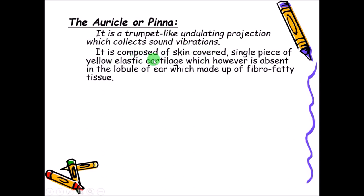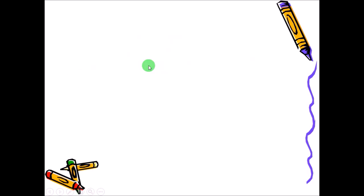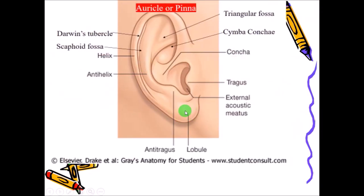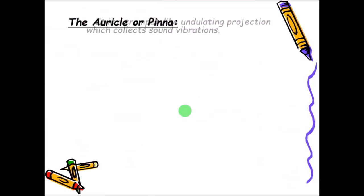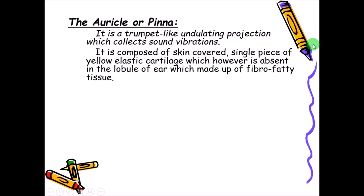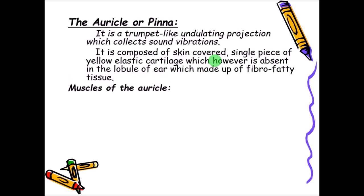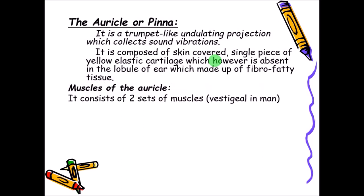The elastic cartilage is absent in the lower part, that is the lobule, which is instead filled with fibro-fatty tissue, making it soft. The whole auricle is covered by skin. There are some muscles in the auricle itself, but they are vestigial in human beings. In lower animals they are functional, helping in twisting and turning of the auricle depending on the direction sounds are coming from.